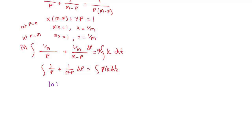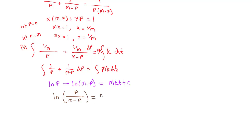That gives us the natural log of P plus the natural log of (M minus P) divided by negative 1 equals MKT plus a constant. Cleaning this up, we get the natural log of P divided by (M minus P) is equal to MKT plus a constant. Getting rid of the natural log by exponentiating both sides gives us P over (M minus P) is equal to e to the MKT times e to the C, which is just another constant.